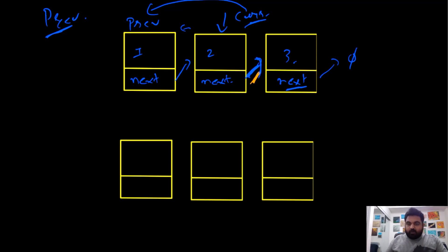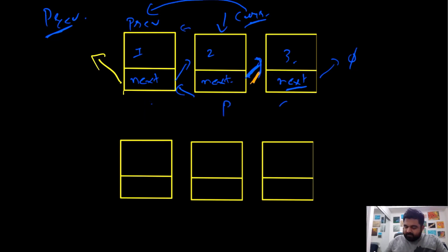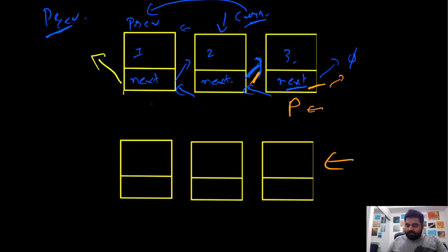We are going to do this iteratively for all the values. Initially, previous would be null and current would be at the head. We will have current.next point towards the previous element, then advance previous to current and current to the next node in the original singly linked list. We repeat the same process until the end. At the end, when the previous node's next element is null, we know that this was the end of the original linked list, so this has to be the start of the new linked list. We would have taken care of all the pointers and we can simply return the reversed linked list.